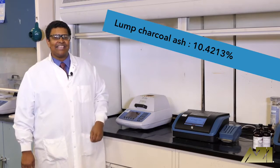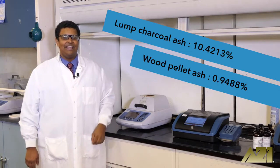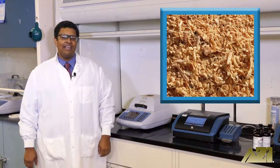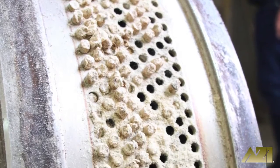The lump charcoal had approximately 10 times the ash content as the wood pellets. This could be because the wood pellets are made entirely of wood that has been ground into sawdust and extruded at a high pressure.